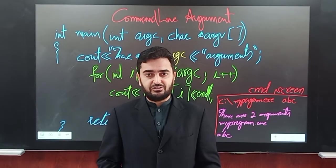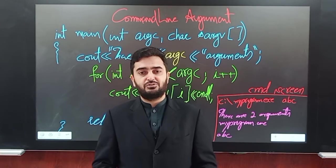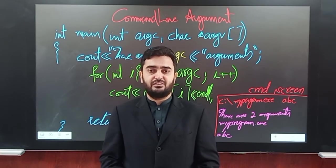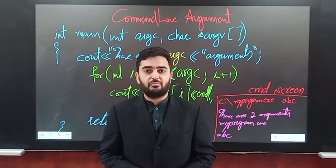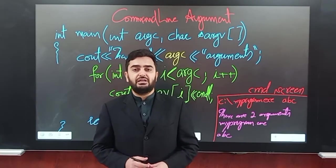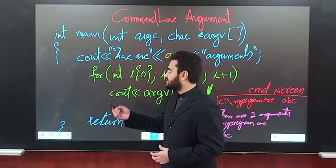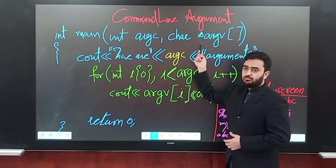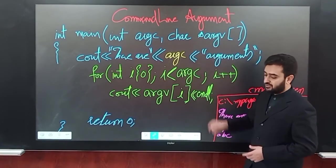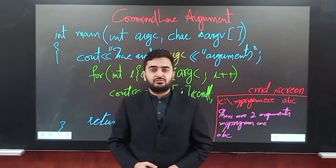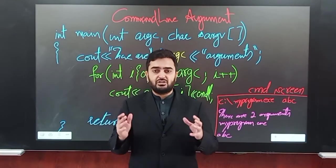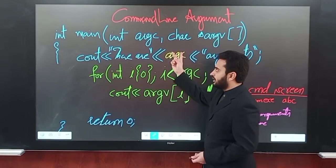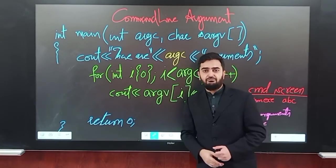Welcome to the lecture on command line arguments. A command line argument is used to utilize the full version of the main function in C++. It means that the main function has two arguments in the parameter list. One is of integer type and the second is of character pointer type, which saves strings — a combination of characters and arrays. These are the two parameters in the full version of the main function.